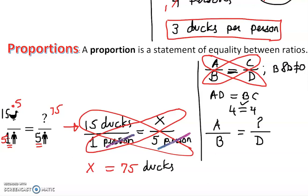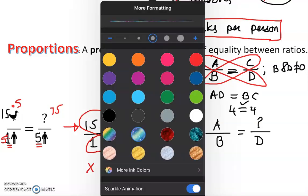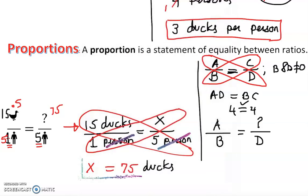So we are looking for that many ducks — five persons can catch 75 ducks. This is how we connect proportion, rate, and ratio together. Thank you for watching this video — I hope you understand.